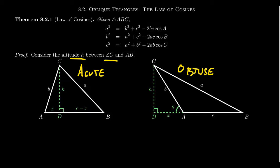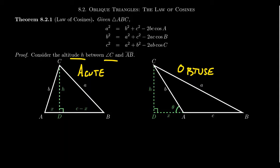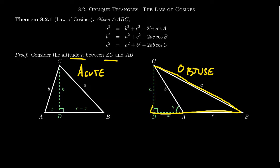In the acute case, because the altitude is interior, you get one right triangle ADB and another right triangle CDB. In the obtuse case, the altitude is exterior to the triangle, so right triangle ADC is not part of triangle ABC, and similarly triangle CBD also includes things outside ABC. In the acute triangle ADC, if H is the altitude — the height of the triangle — that's one leg of the right triangle. Side length B would be the hypotenuse, and distance AD we'll call X. We do the same in the obtuse case for triangle ADC, with altitude H, hypotenuse B, and AD called X again.